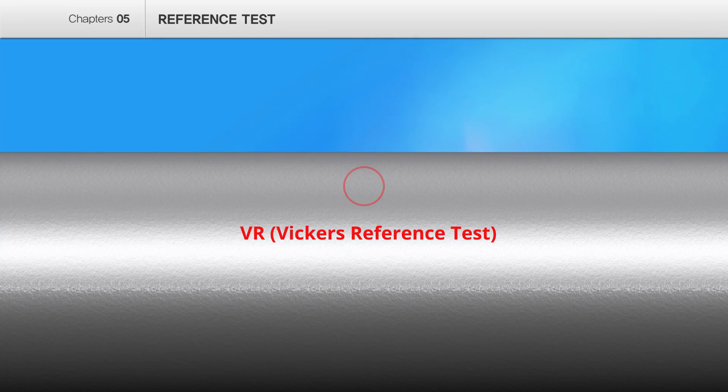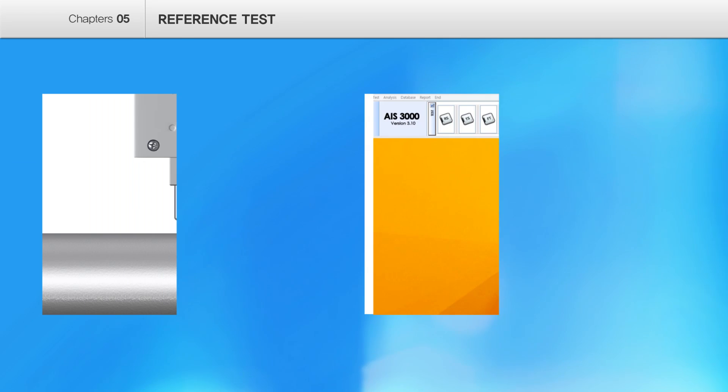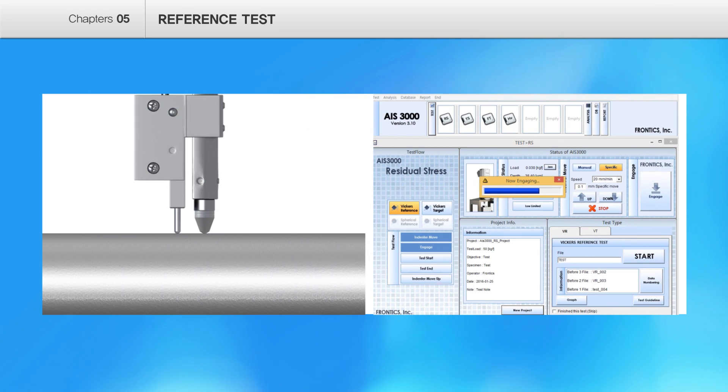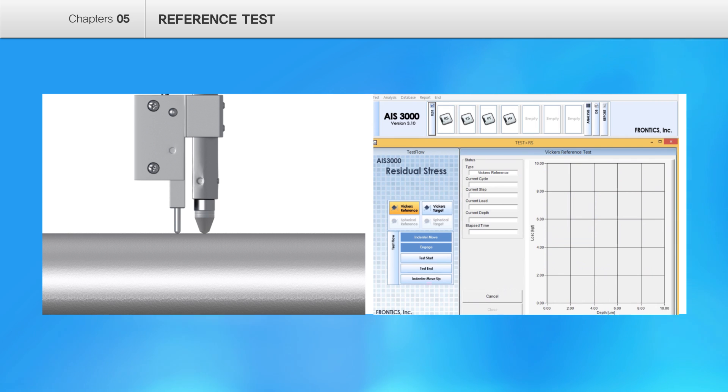At first, we prepare stress-free state specimen. After checking the testing surface, fix the IIT instrument to the tested target with using proper attachment, and move indenter down to implement the testing.